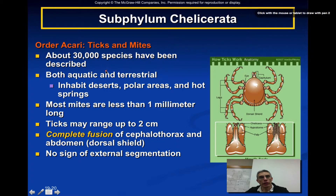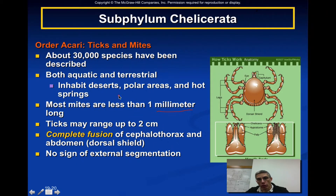The last group is the ticks and mites, order Acari. There are about 30,000 species described. They can be both aquatic and terrestrial, inhabiting deserts, polar areas, and hot springs. Most mites are less than one millimeter long, while ticks can range up to two centimeters. Ticks and mites have a complete fusion between the cephalothorax and abdominal region, sometimes referred to as the dorsal shield — definitely different from spiders and scorpions.